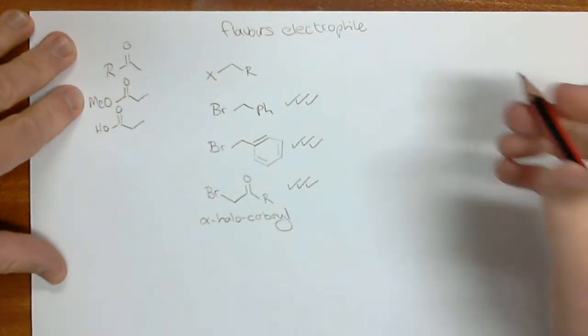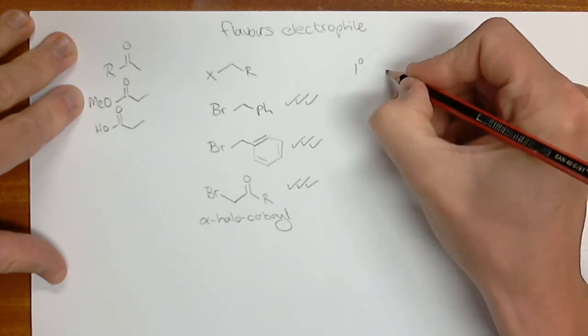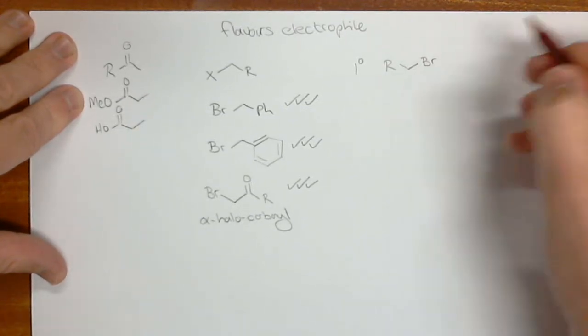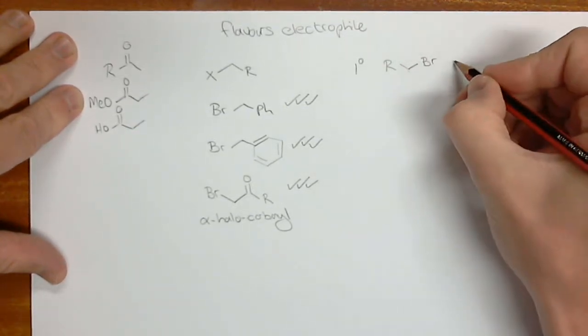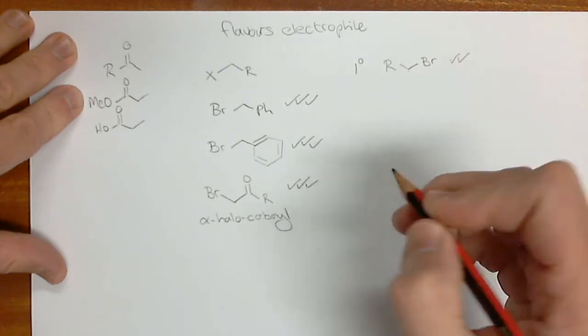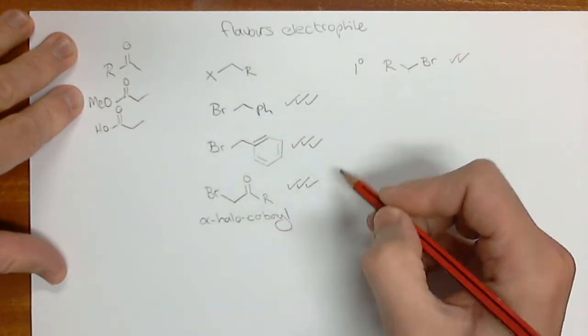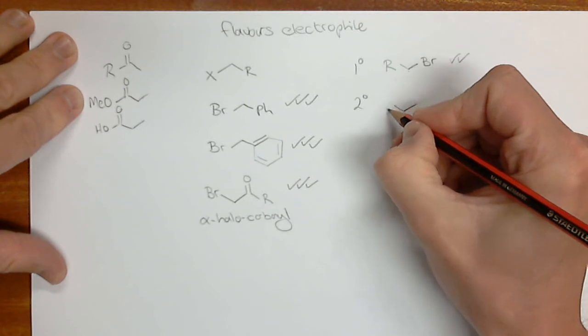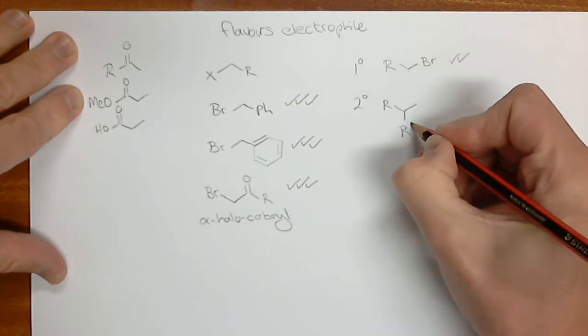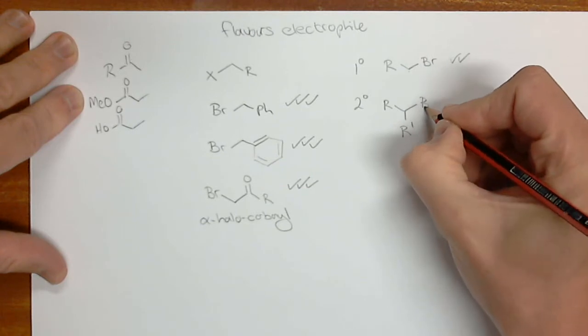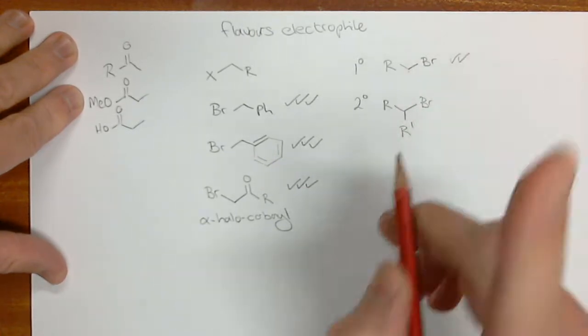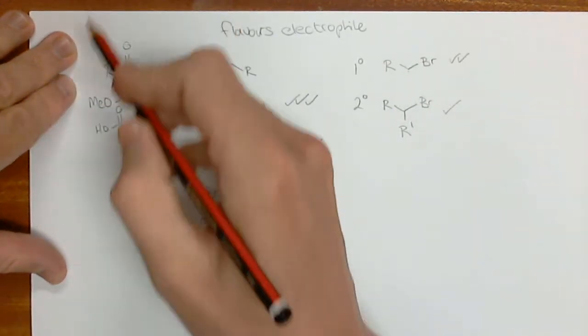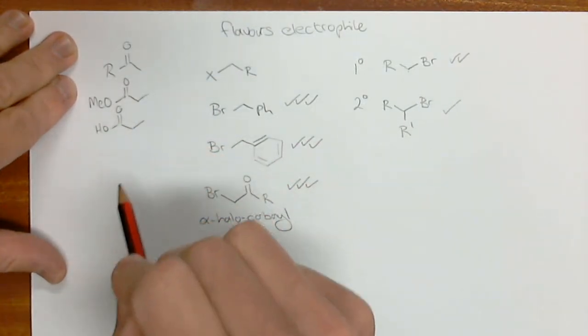But there are other alkyl groups. We have our primary alkyl halides, something like methyl bromide or chlorine. These are okay as well, not as good as the activated ones, but they're okay. Then we have the secondary ones with two R groups and a leaving group. This is more sterically hindered, not as good. They do come up as electrophiles for alkylation of enolates.